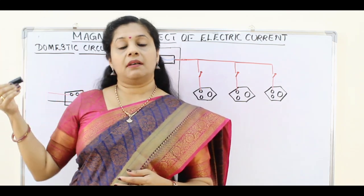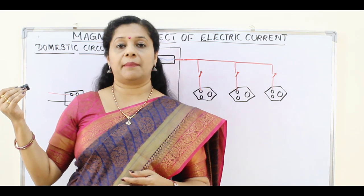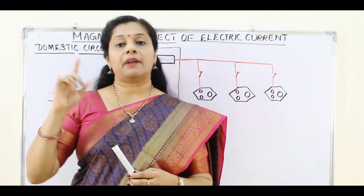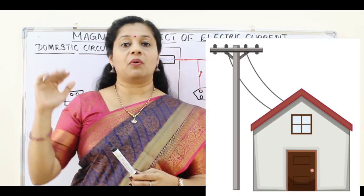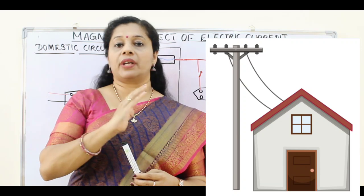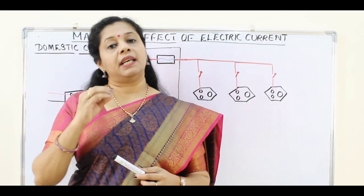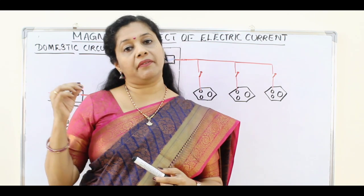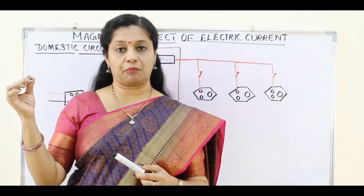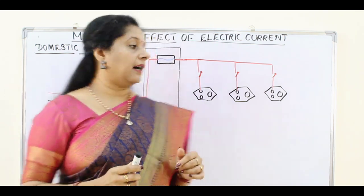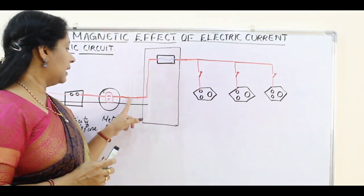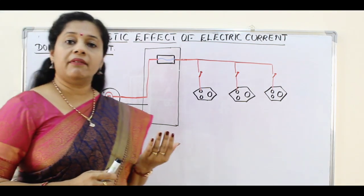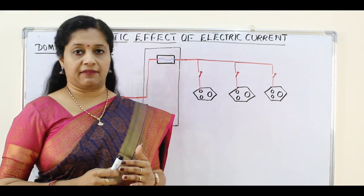So when electricity is coming through transmission lines, what happens? Near our house there will be an electric port. From that electric port we will be drawing current into our house. There are two wires coming from the electric port to our house — a red wire and a black wire, called a live wire and a neutral wire respectively.